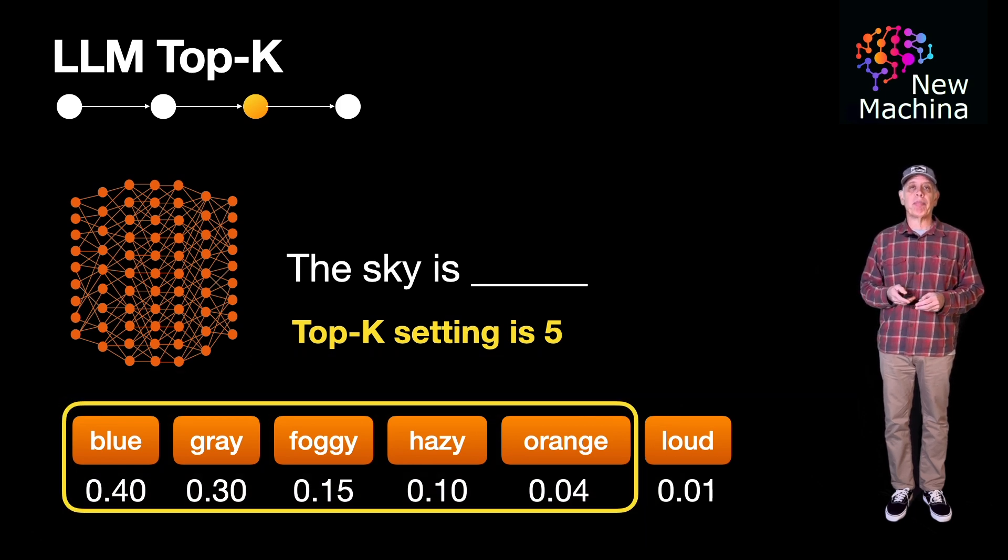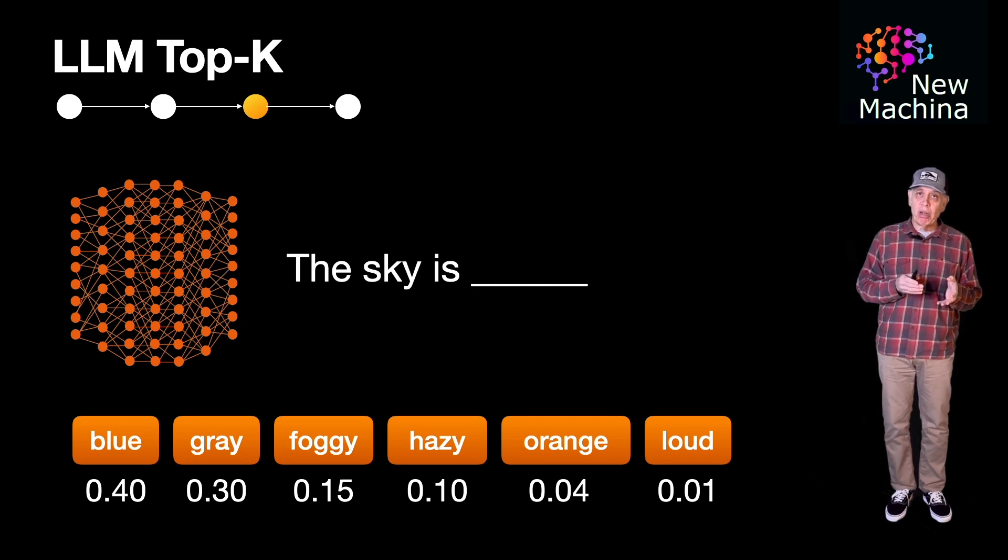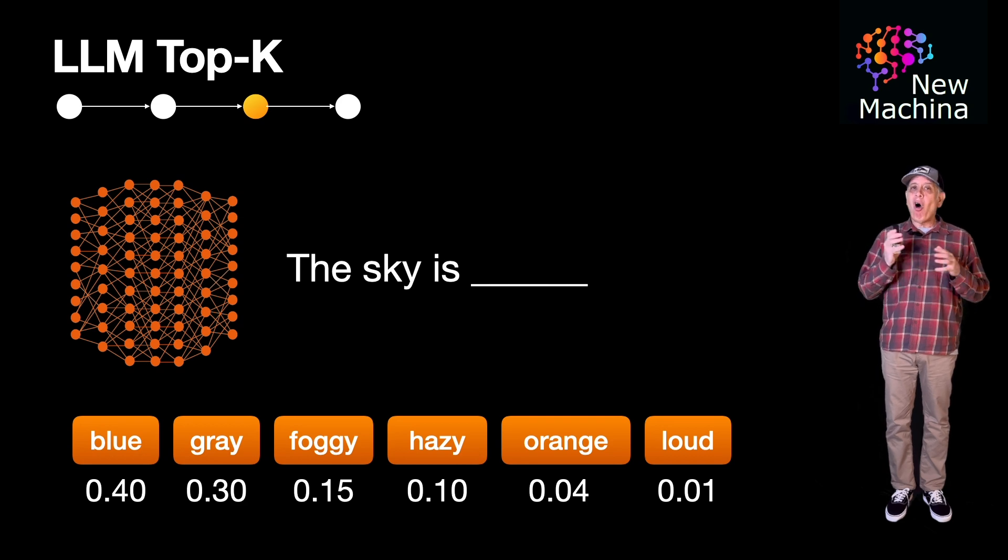So hold on a minute, it's kind of confusing. So what exactly is the difference between temperature, Top-P, and Top-K? They all kind of seem to do the same thing.